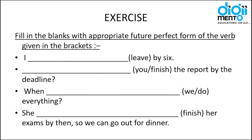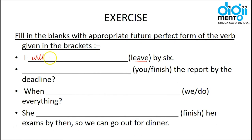Now let's do exercises — fill in the blanks with the appropriate future perfect form of the verb given in brackets. First: 'I will have left by 6.' It is future perfect so it comes with 'will have' plus the third form.